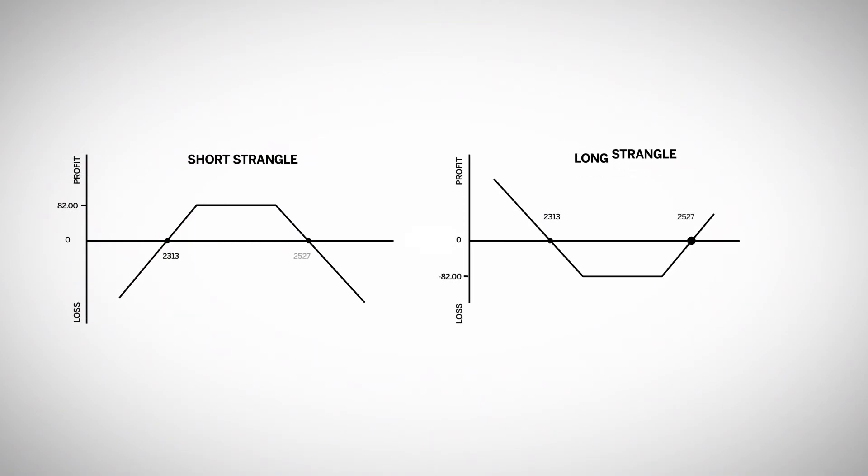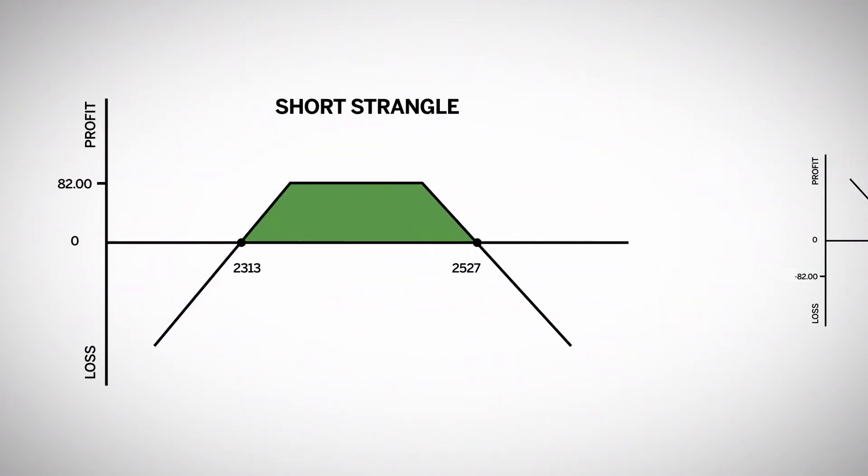As previously discussed, the break-even points are 23.13 and 25.27. The break-even points are the same regardless if you are long or short the strangle.